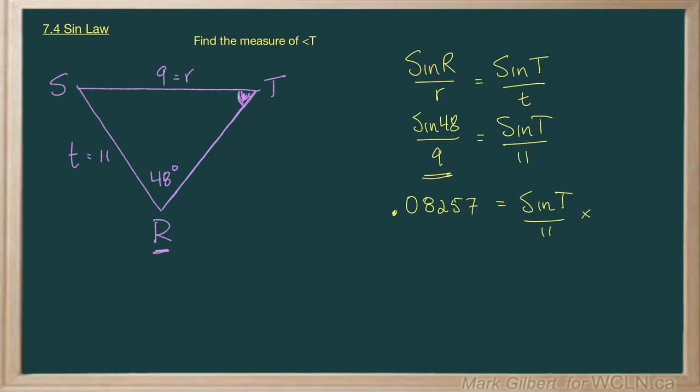So let's multiply both sides by 11 to get the sine of T by itself. And we get 0.908288 equal to the sine of T. I would hold a few decimal places there just to make sure that your angle that we find is accurate.